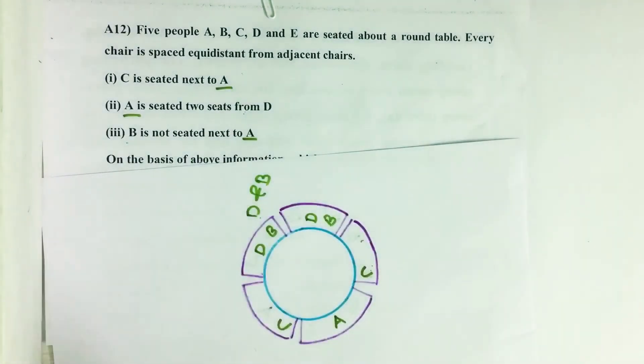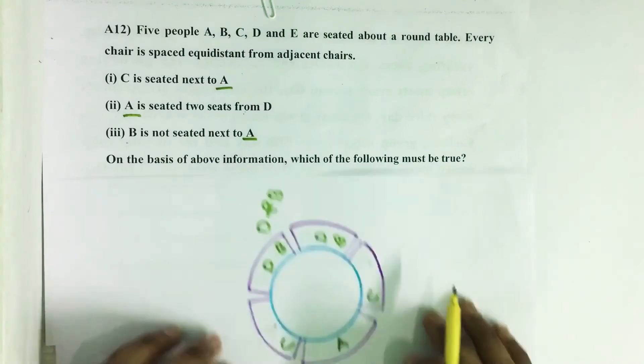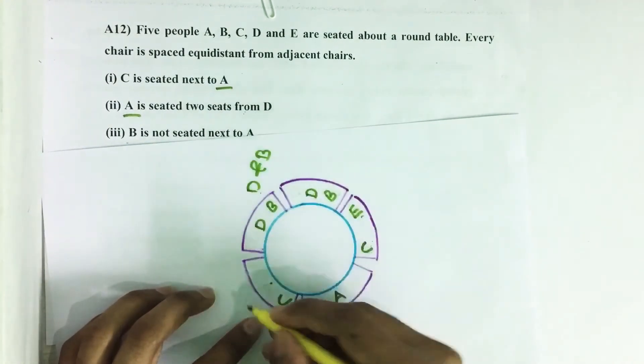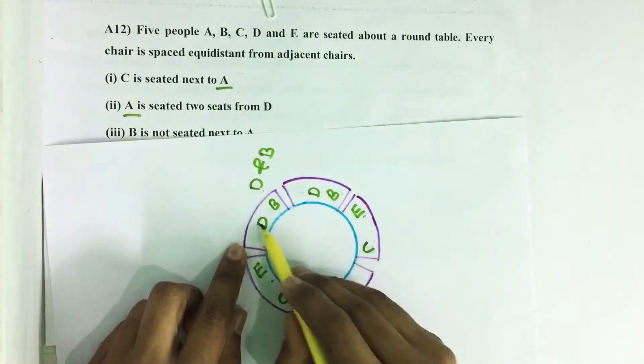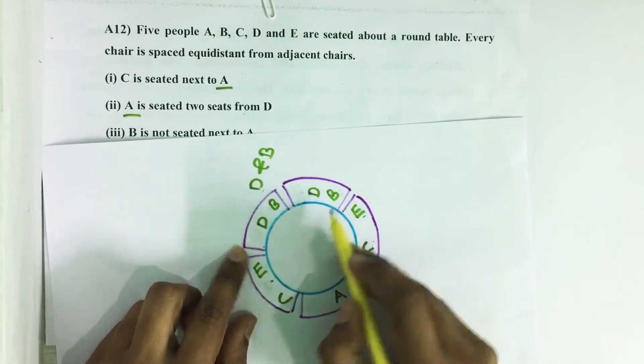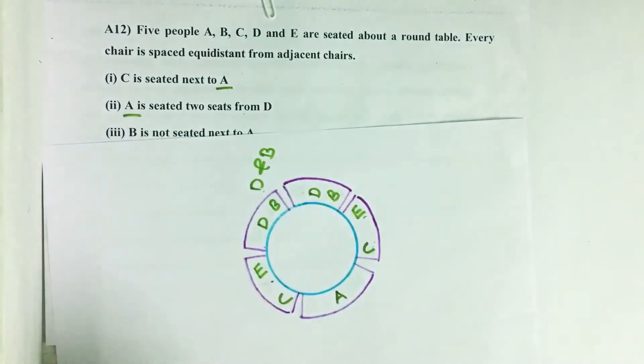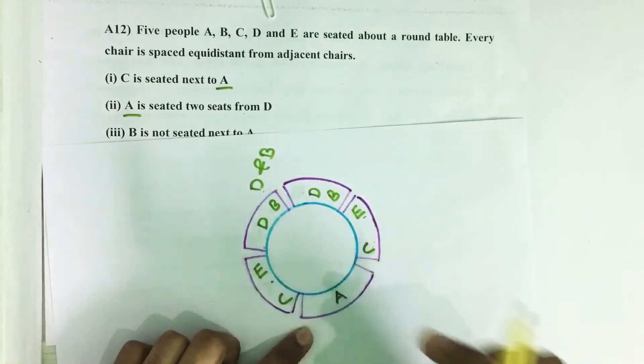Then we have one more person, that is E. It can be seated either here or here. D and B already seated in these two, so we can't allow E to sit on these two seats. So now we did all possible seating arrangements.